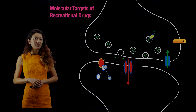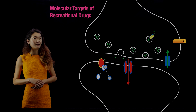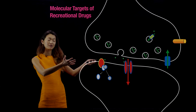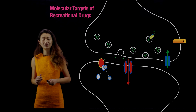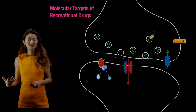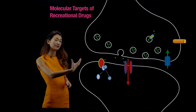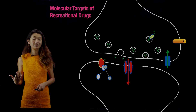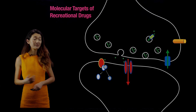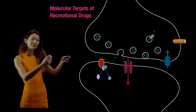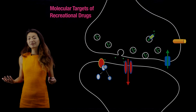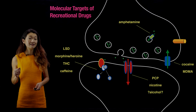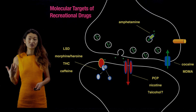We're going to be talking about the molecular targets of recreational drugs. Here's a diagram of a chemical synapse that you've already seen many different times in the previous videos. If you want a review of the different steps of chemical synaptic transmission, please review those videos now. But once you've figured out what all of these molecules are, perhaps it will not surprise you that every single one of them is a molecular target of recreational drugs.